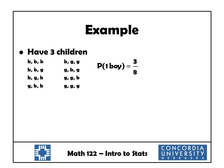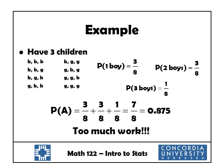Let's list the sample space. If I have three children, I could have boy-boy-boy, boy-boy-girl, boy-girl-boy, and so on — eight different outcomes. In exactly three of them I have exactly one boy, so the probability of one boy is 3/8. Likewise, in exactly three I have two boys, so the probability of two boys is 3/8. And in one of those outcomes I have exactly three boys, so the probability of three boys is 1/8. So now I can add 3/8 plus 3/8 plus 1/8 to get 7/8 — that's the probability of having at least one boy.